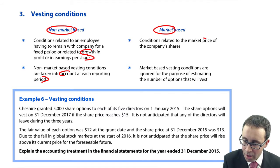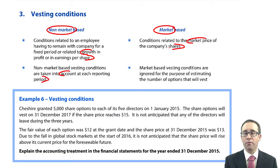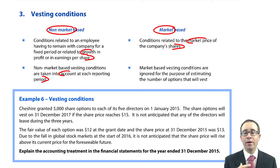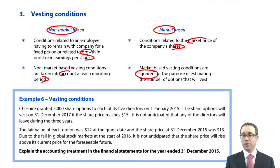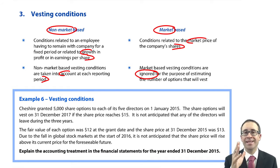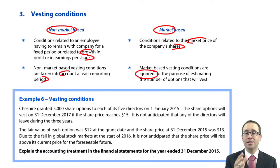Market-based vesting conditions are conditions related to the market price of the company's shares — so a growth in share price or the share price has to meet a predetermined target. If there are market-based vesting conditions, the treatment is very simple: we ignore them. We do not consider market-based vesting conditions until the vesting date arises. So even if we're one year, two years, or three years into the scheme and we don't think that vesting condition will materialise, we ignore it.